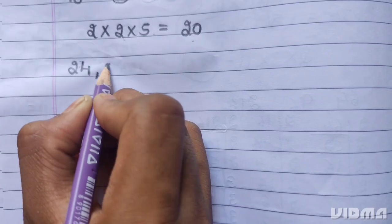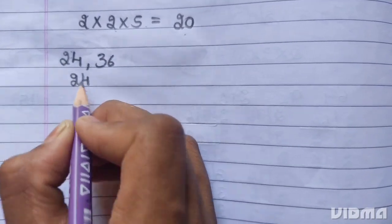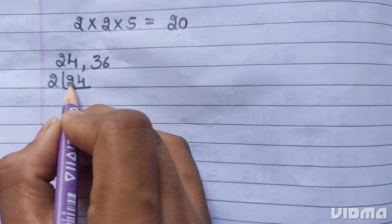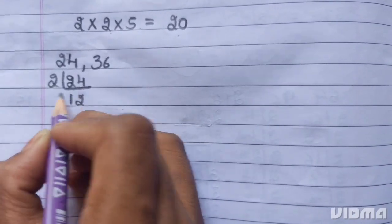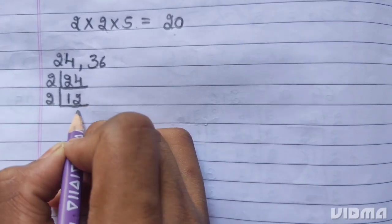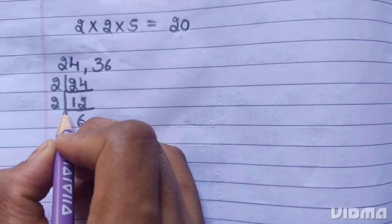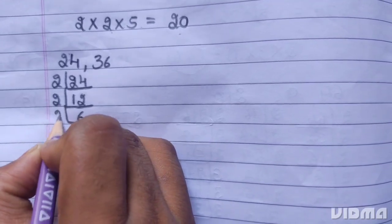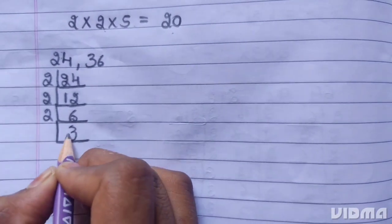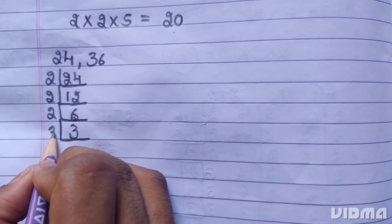Next: 24 and 36. First we do 24. 24 is divisible by 2. 2 times 12 are 24. 2 times 6 are 12. 2 times 3 are 6. 3 is a prime number. It divides itself. 3 times 1 is 3.